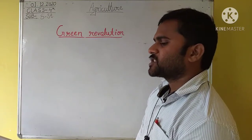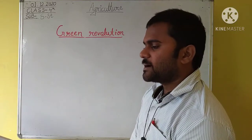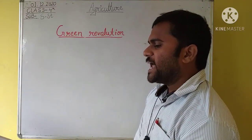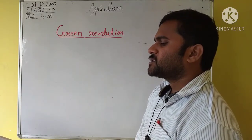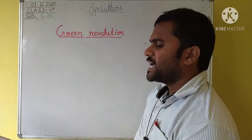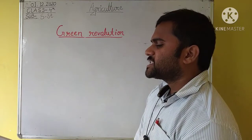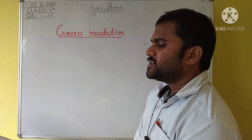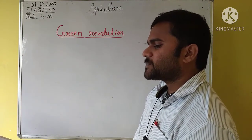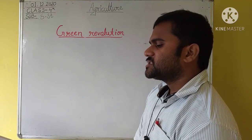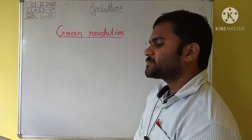India has made great progress in agriculture. The Government of India launched a program called the Green Revolution in 1960 to help farmers increase their agricultural production. In this program, farmers were provided better methods of irrigation, high quality seeds, manure and fertilizer at reasonable prices. Agricultural machines such as tractors, threshers, and harvesters were also provided to farmers on easy terms.